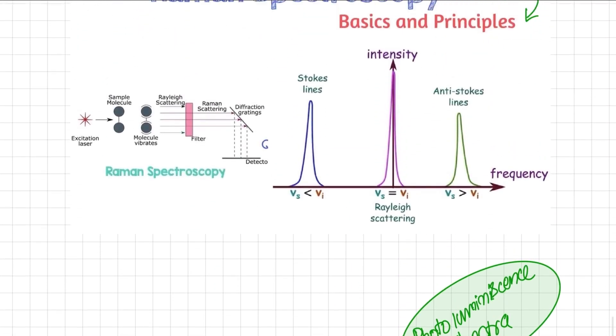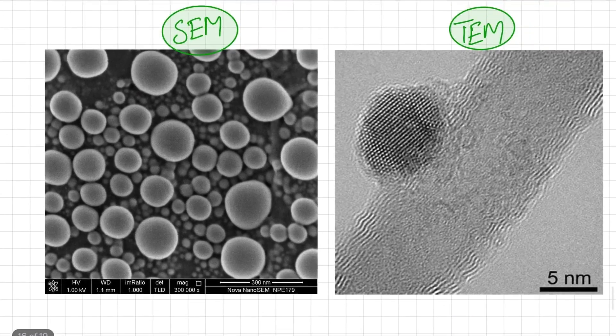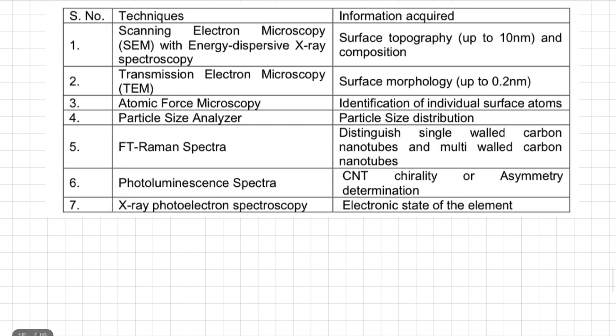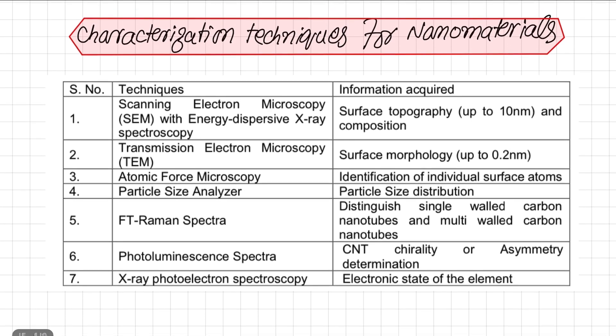These were all the characterization techniques collectively used to obtain information about nanomaterials. When we have information about surface phenomena and the nature of materials on the surface, we can exploit this to develop useful applications. That concludes today's lecture. If you have any questions, please leave them in the comment section and I will respond as soon as possible. Thank you.